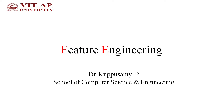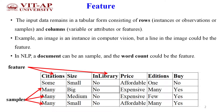This session is about feature engineering. First, we will understand what a feature is in a given dataset. The input data in tabular format consists of a number of rows and columns. The rows are called instances, observations, or samples, and the columns are called variables, attributes, or features.